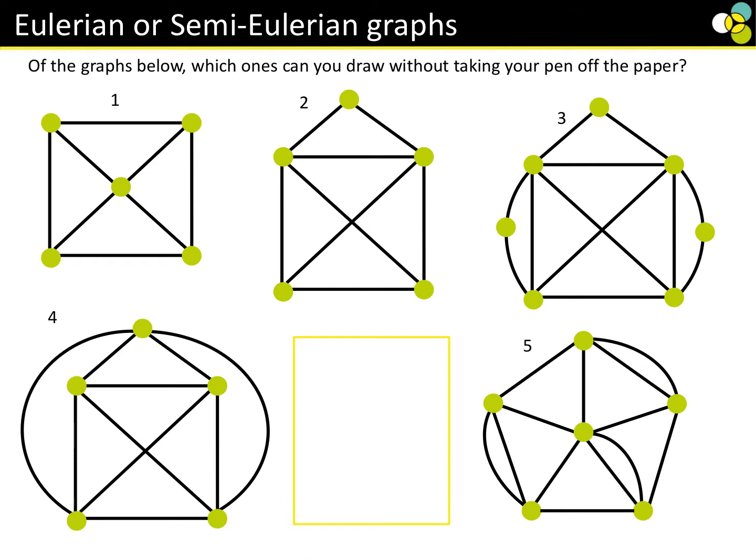We have two types of graphs to look at: Eulerian or semi-Eulerian. You can decide which ones you can draw without taking your pen off the paper. You've got five to do, and I'm going to give you two minutes — which ones can you draw without taking your pen off the paper?